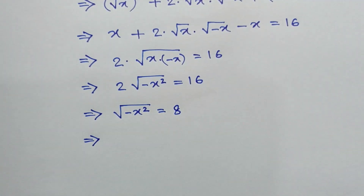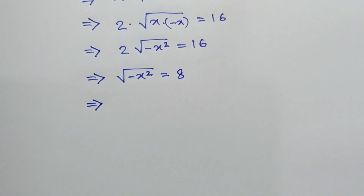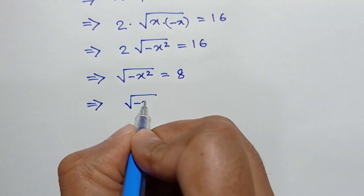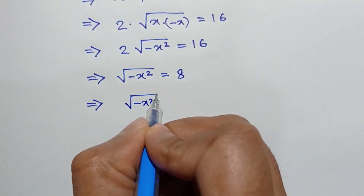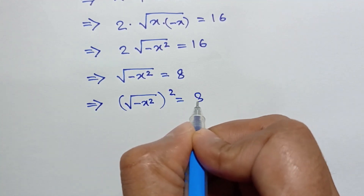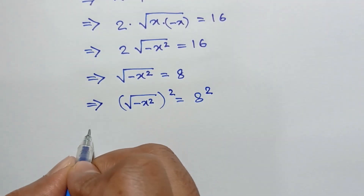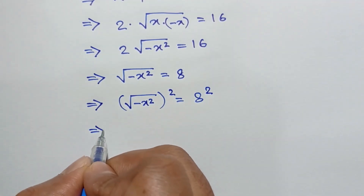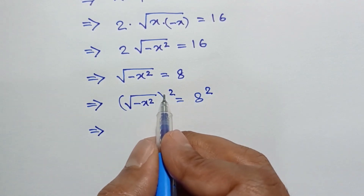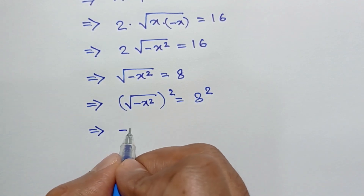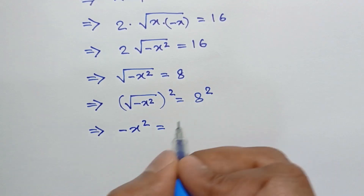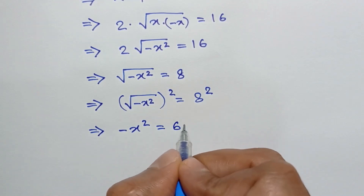Taking a square on both sides, we will have square root of negative x squared, whole squared, is equal to 8 squared. This square root and square will cancel, so it will be negative x squared is equal to 8 squared, which is equal to 64.